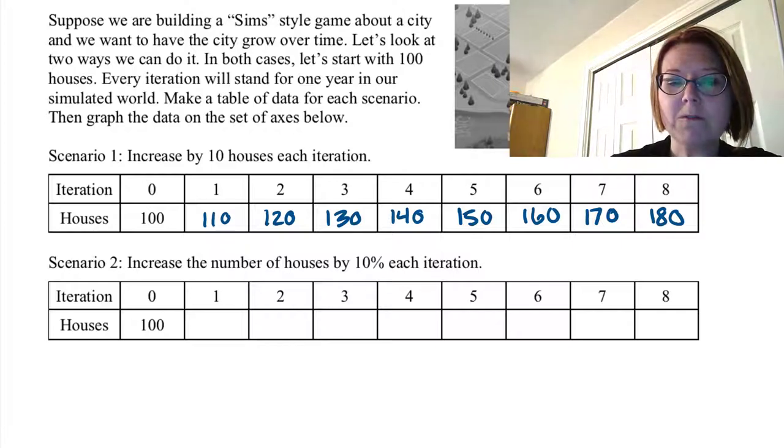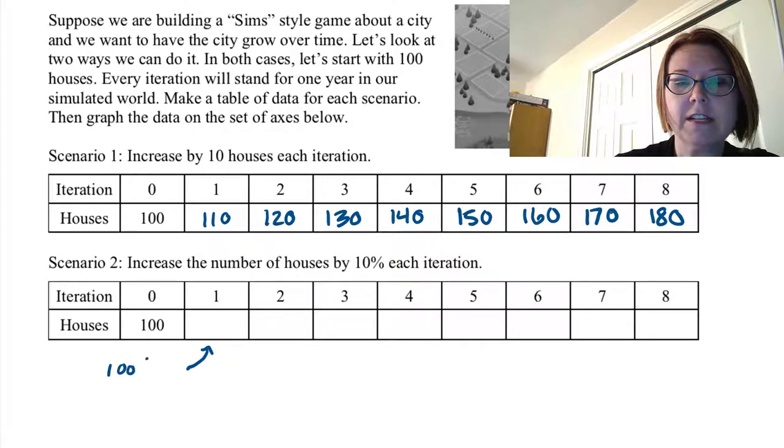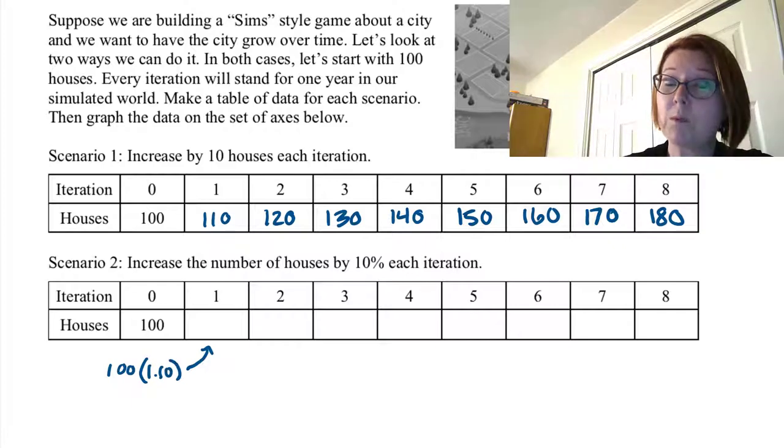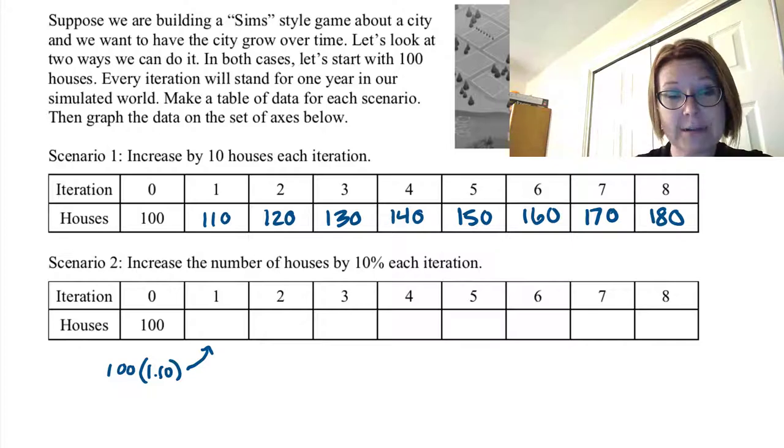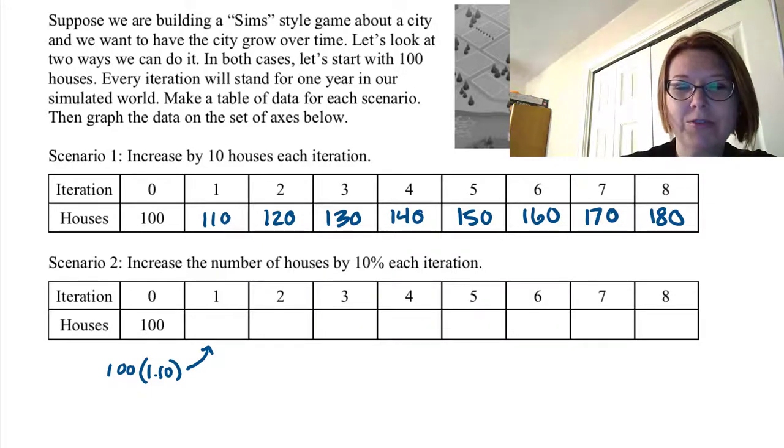So when we do the first iteration, we're actually doing 100 times 1.10. 1.10 stands for 110%. We're increasing by 10%. So if you do 100 times 1.10 you'll get 110.